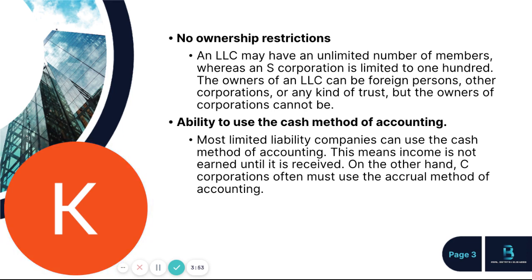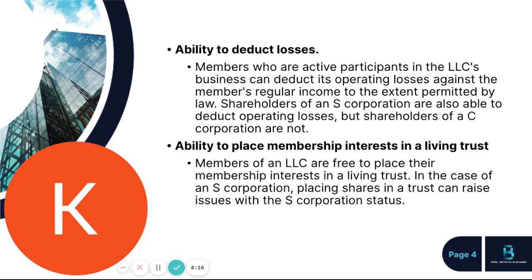A lesser-known benefit is the ability to use the cash method of accounting, where income is not earned until it's received. C corporations often use the accrual method, which is the inverse of that. Another major benefit is the ability to deduct losses — where members are active participants in the LLC's business, they can deduct operating losses against their regular personal income, to the extent permitted by law in any given state.